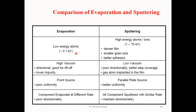In evaporation we have low-energy atoms — we can utilize atoms with energy approximately equal to 0.1 electron volt. Comparing this with sputtering, in sputtering we normally utilize high-energy atoms or ions with energy in the range of 1 to 10 electron volts. As a result of this, sputtering produces denser films, smaller grain size, and better adhesion.